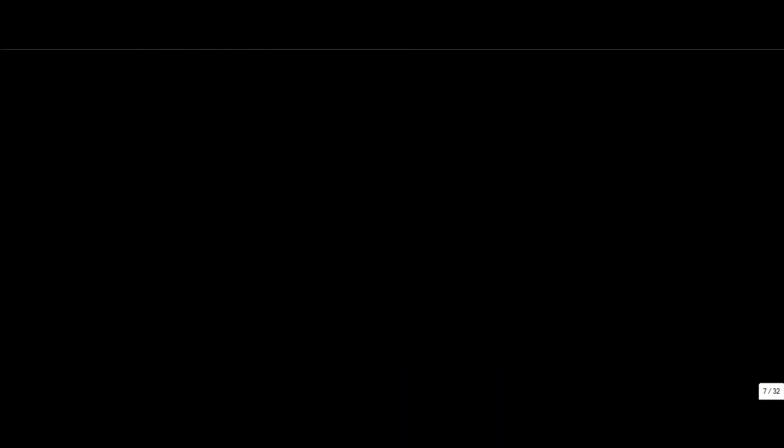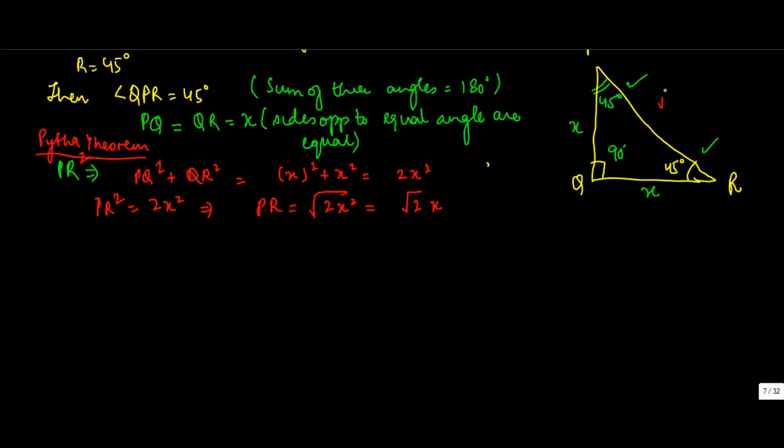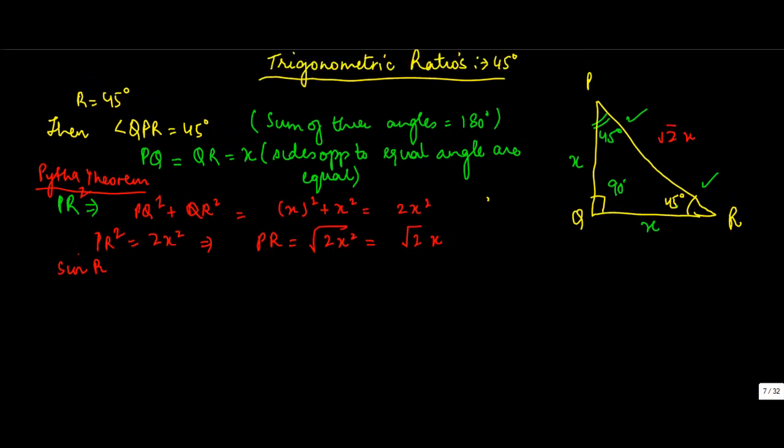Now once this is done, we can very easily find out the value of sin, cos and tan. So sin R, because we had taken R as 45 degree, is equal to side opposite to angle R upon hypotenuse, or X upon root 2 into X. This cancels with this, so this gives us the value of 1 upon root 2.